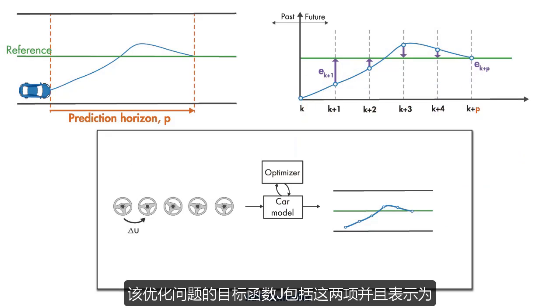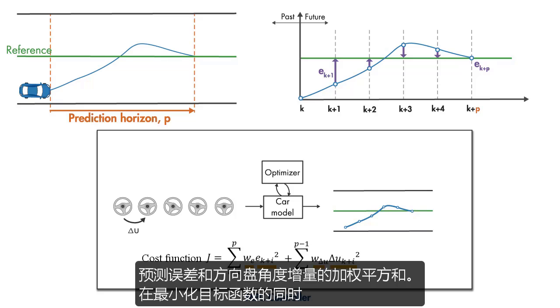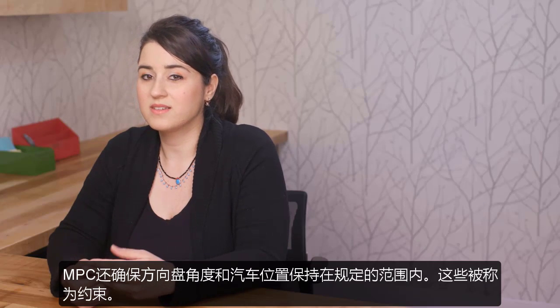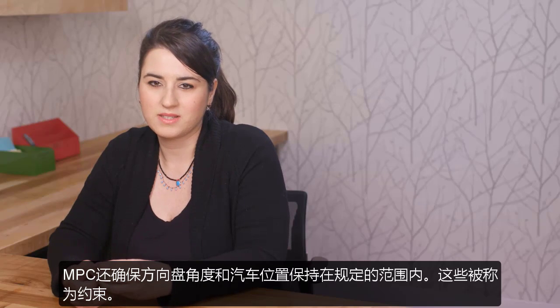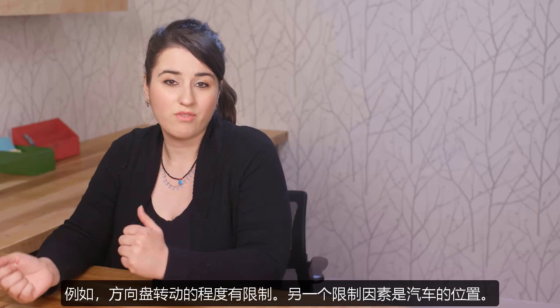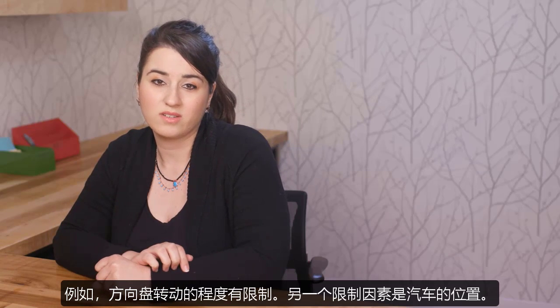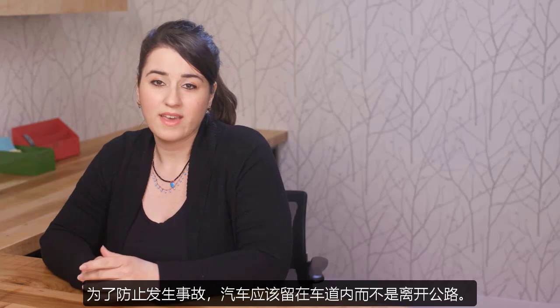The cost function J of this optimization problem includes both these terms and is represented as a weighted square sum of the predicted errors and steering wheel angle increments. While minimizing this cost function, MPC also makes sure that the steering wheel angle and car's position stay within prescribed limits. These are referred to as constraints. For example, there is a limit on how far the steering wheel can be turned. Another constraint is on the car's position.